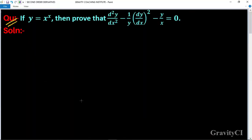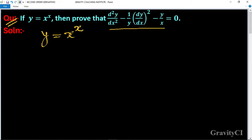If y equals x to the power x, then prove that the given expression equals 0. So here, given y equal to x to the power x.